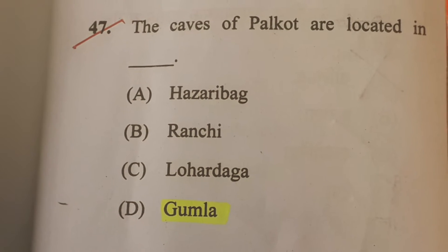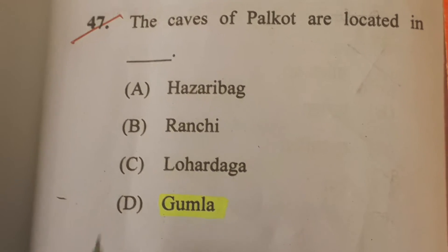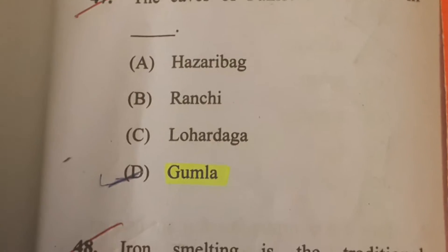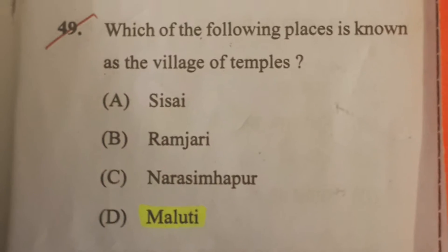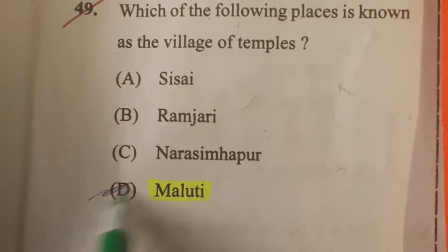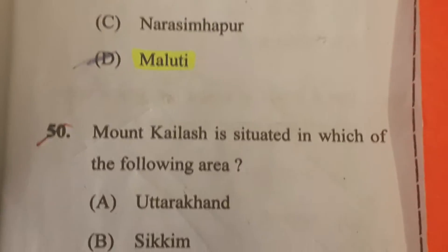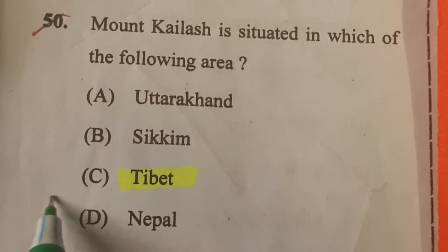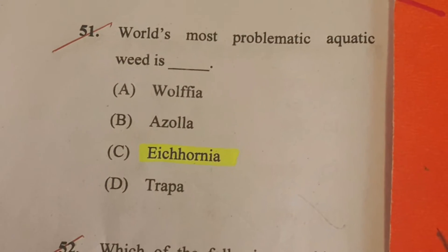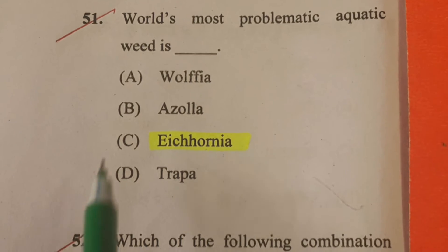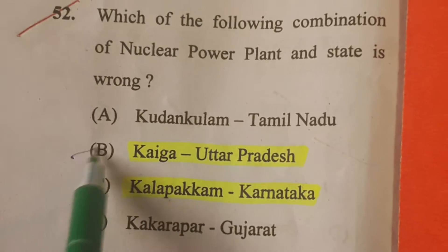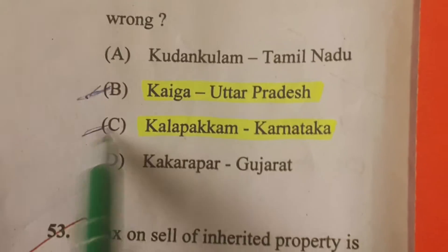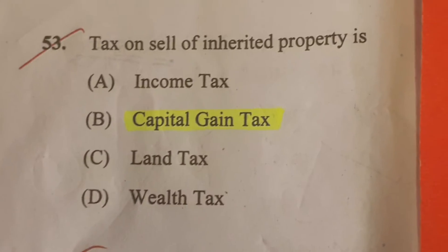Question number 47, answer is D. Next, question number 48, answer is B. Next, question number 49, option is D. Next, question number 50, answer is C. Question 51, answer is C. Next, 52, answer B — C, it can be both. Next, 53, answer B.